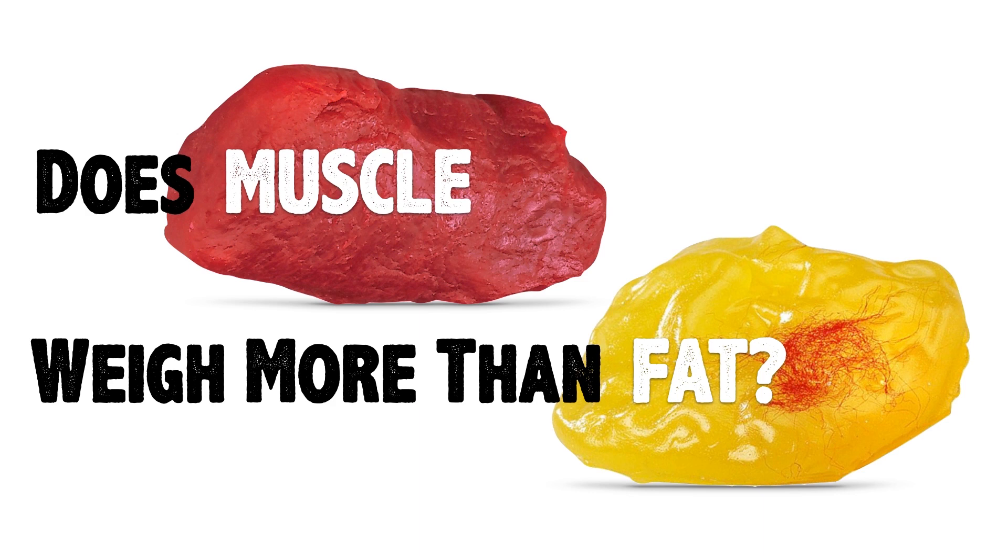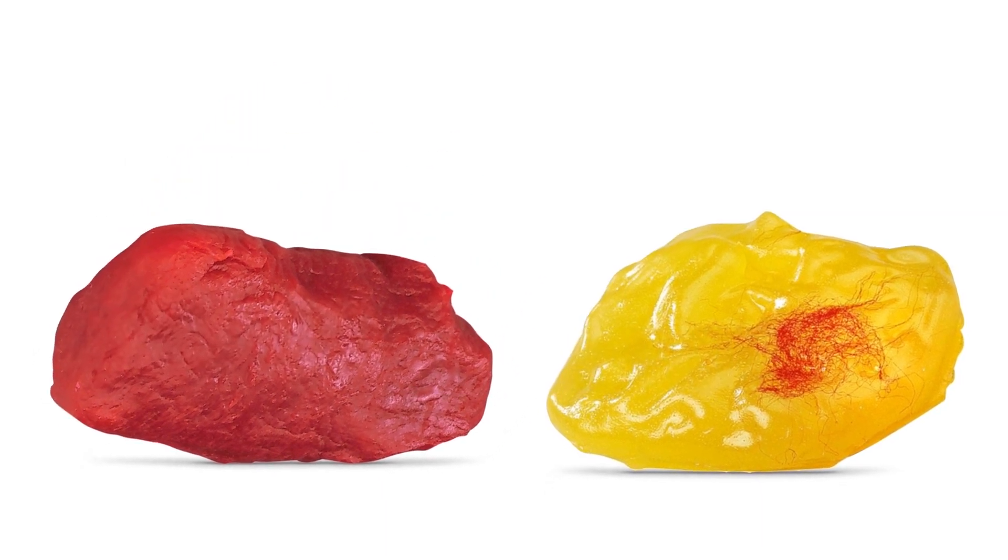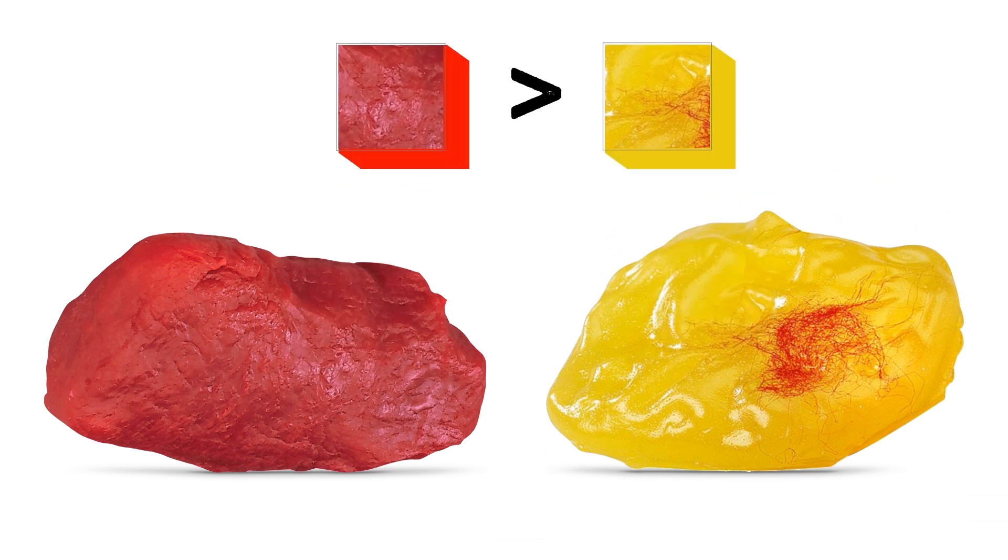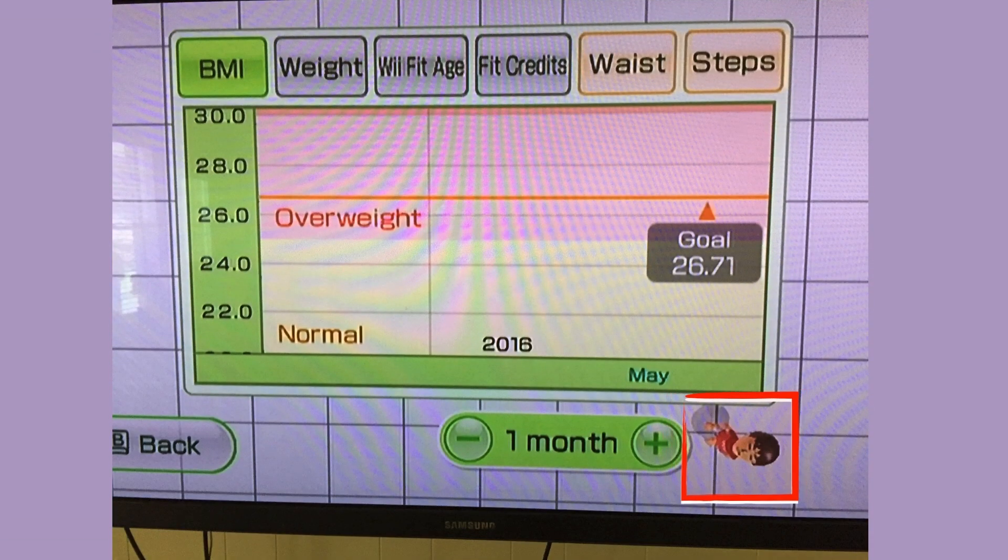Pound versus pound, sure they would weigh the same. One pound of muscle weighs the same as one pound of fat. On the other hand, if you took a square inch of muscle, it would weigh more than a square inch of fat, just like a square foot of bricks would weigh more than a square foot of feathers.